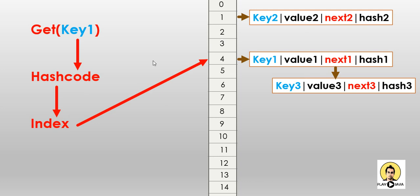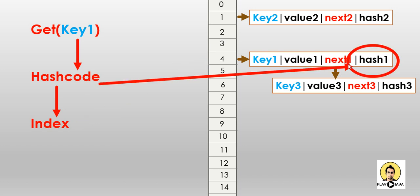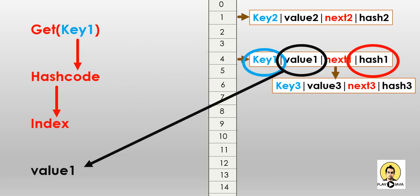In the get method, it checks whether the hash code — hash1 — matches with the stored hash code. If it matches, then it checks the key. When both the key and hash code match, the value — value1 — is returned to the user. So first the hash code is checked, then the key is checked, and the value is returned. This is how the get method works.